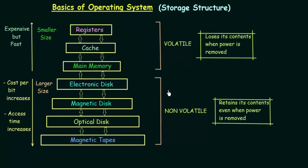On the other hand, secondary memory is non-volatile, which means it retains its contents even when the power is removed. Even if you switch off power to these non-volatile devices, their contents will not get erased. So registers, cache, and main memory are volatile, whereas electronic disk, magnetic disk, optical disk, and magnetic tapes — the secondary storage devices — are non-volatile.